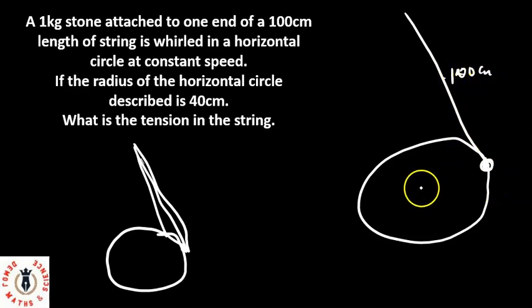Now the horizontal circle, this horizontal circle, has a radius of 40 centimeters. And definitely here is the vertical component from the tension of the string.